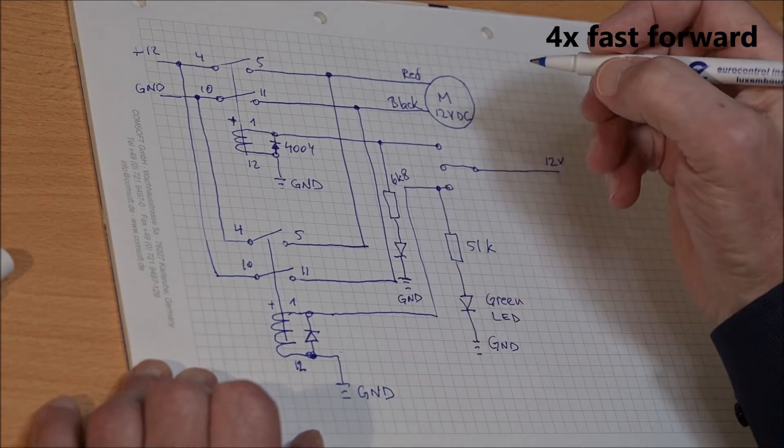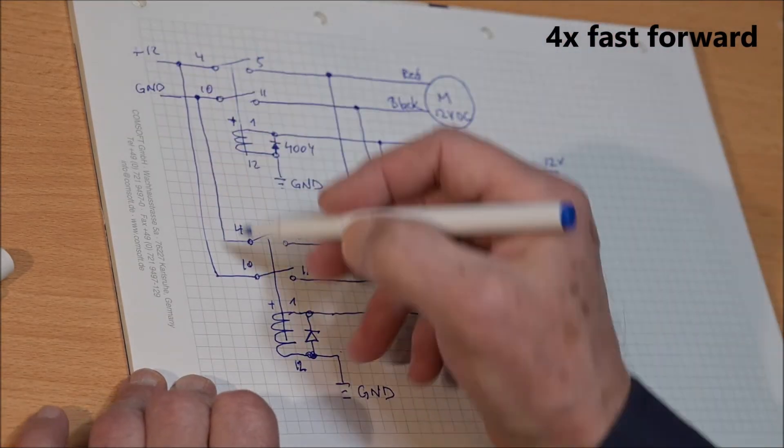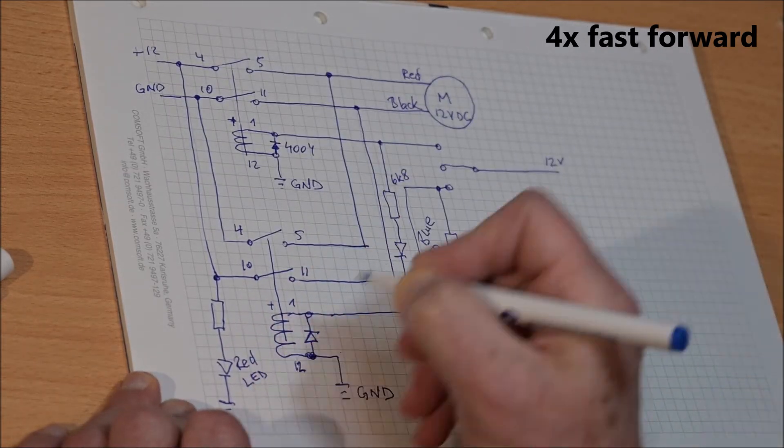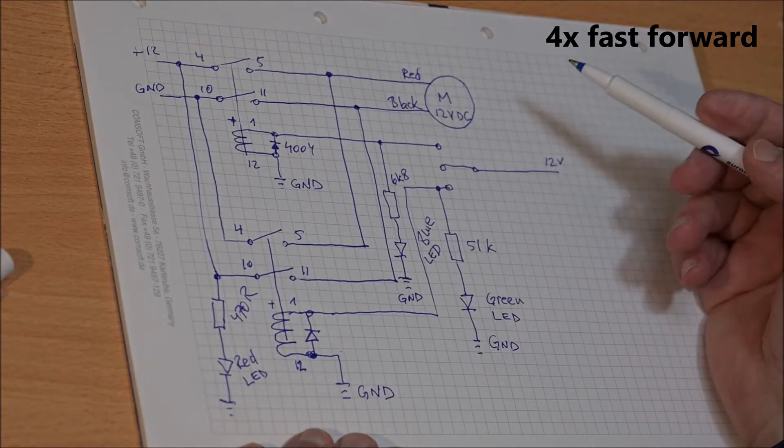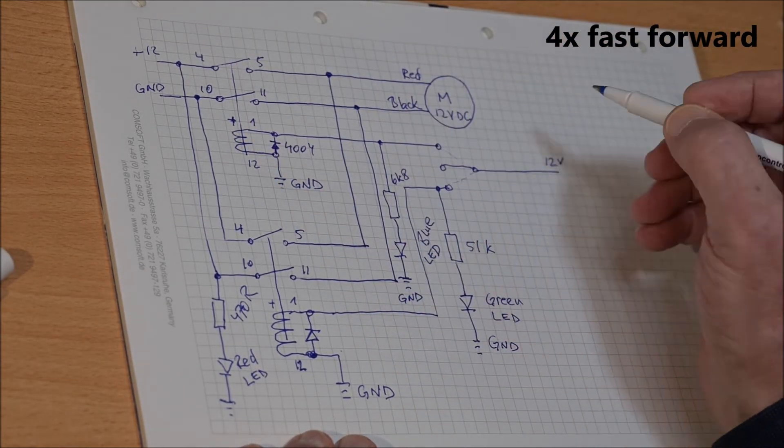This completes the electrical part of the design, except that this must be doubled since the drawing only shows two relays and as I said I will be using four. The other two relays are of course connected in parallel with these two.